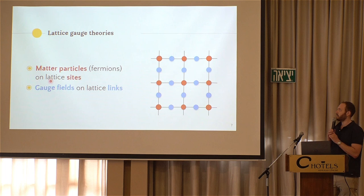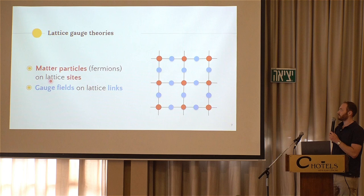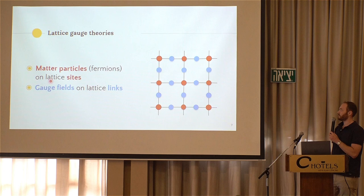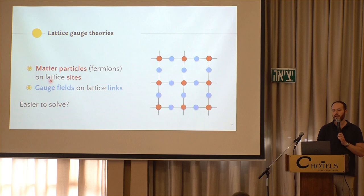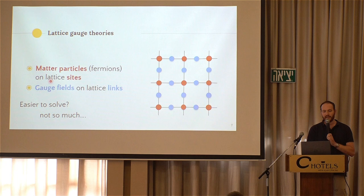So the structure of the Hilbert space of these lattice gauge theories is as follows. You have matter particles, which are usually fermions on the sides of the lattice, and you have the gauge field degrees of freedom, which can be many things, on the links. Then you ask yourself, is it actually easier to solve? And the answer is generally no, because this is still a many-body quantum problem. If you have strong interactions, then it's not easy to solve analytically.